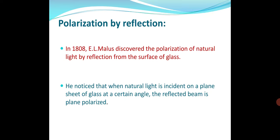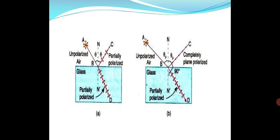First we will see the polarization by reflection. This was discovered by E.L. Malus — the polarization of natural light by reflection from the surface of glass. When unpolarized light is allowed to fall on a glass surface, we get partially polarized reflected light and partially polarized refracted light.